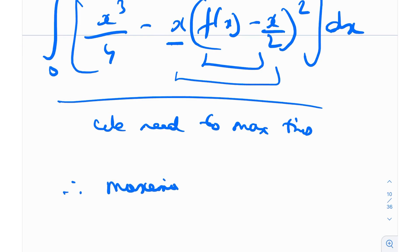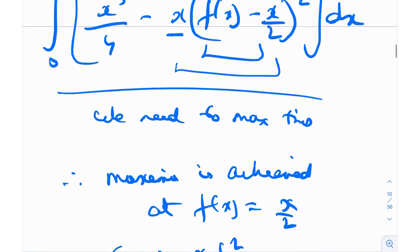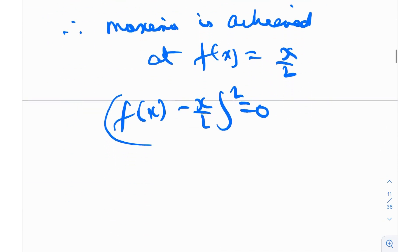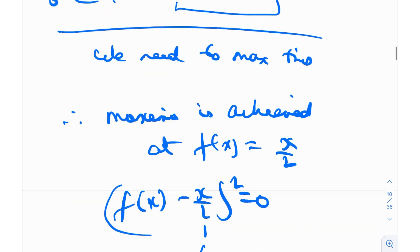Therefore, maxima is achieved when f(x) equals x/2, because at this point, f(x) - x/2 whole squared would be 0. Therefore, the maxima would be nothing but the integral from 0 to 1 of the remaining portion x³/4 dx.